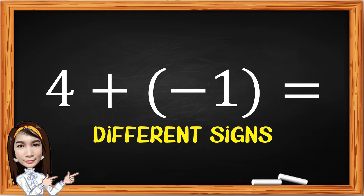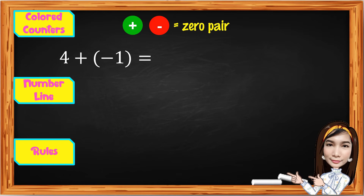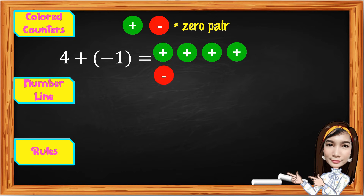Let's continue with another unlike signs example: 4 plus negative 1. If the next number is negative, always separate the plus and the negative sign using parentheses — so we write 4 plus negative 1 in parentheses. Using colored counters: for positive 4, use 4 green counters; for negative 1, use 1 red counter. Cancel 1 zero pair and count the remaining 3 green counters. The result is positive 3.